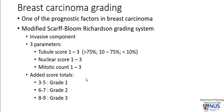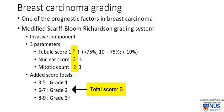Putting this together, we have a tubule score of 2, a nuclear score of 2, and a mitotic score of 2, bringing us to a total score of 6. Therefore, this is a grade 2 tumor. This is how the pathologist grades invasive breast carcinoma.